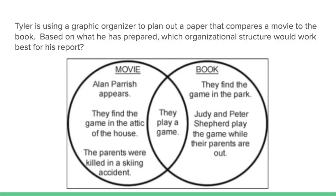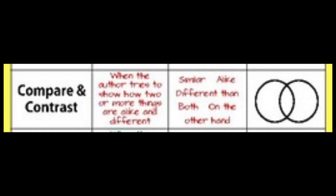One bonus one here — see if you can figure out what book or movie this is about. Tyler is using a graphic organizer to plan out a paper that compares a movie to the book. In the movie, Alan Parrish appears, they find a game in the attic of the house, and the parents are killed in a skiing accident. In the book, they find the game in the park, Judy and Peter Shepard play the game while their parents are out, and the similarity is they play a game. The organizational structure is compare and contrast — nicely done.